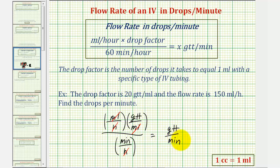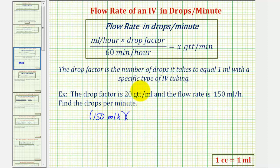Now, let's go and take a look at our first example. The drop factor is 20 drops per mil, and the flow rate is 150 mil per hour. So we'll have the flow rate in milliliters per hour, which is 150 milliliters per hour times the drop factor, which is 20 drops per mil, and we're going to divide this by 60 minutes per hour.